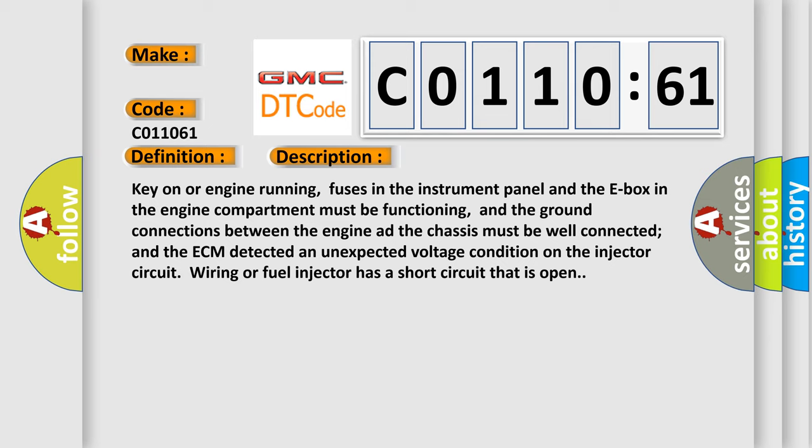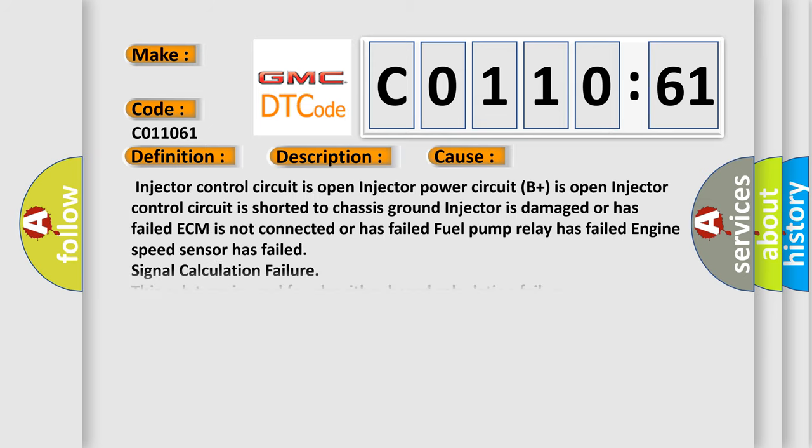This diagnostic error occurs most often in these cases: Injector control circuit is open, Injector power circuit B plus is open, Injector control circuit is shorted to chassis ground, injector is damaged or has failed, ECM is not connected or has failed, Fuel pump relay has failed, Engine speed sensor has failed, Signal calculation failure. This subtype is used for algorithm-based calculation failures.